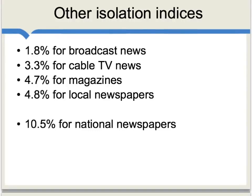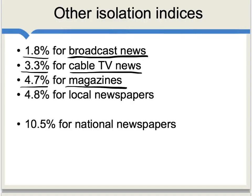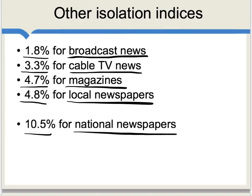It's worth comparing the 7.5% isolation index for the Internet to other isolation indices. For broadcast news, we have 1.8% — extremely low. For cable TV news, there's more sorting going on, at about 3.3%. Magazines come in at 4.7%, and local newspapers at 4.8%. Those are all lower than for the Internet, but note that national newspapers have an isolation index calculated at 10.5%, which is higher than what we find for the Internet.